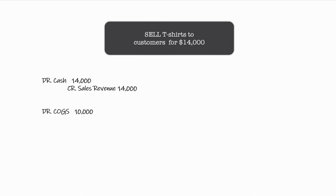Additionally, what companies would do is debit a new account called cost of goods sold. What is the expense associated with the initial purchase of those t-shirts? The t-shirts were purchased for $10,000, so an expense — cost of goods sold — is debited for $10,000. Inventory is also reduced; it's no longer on the books, so inventory is credited for $10,000.